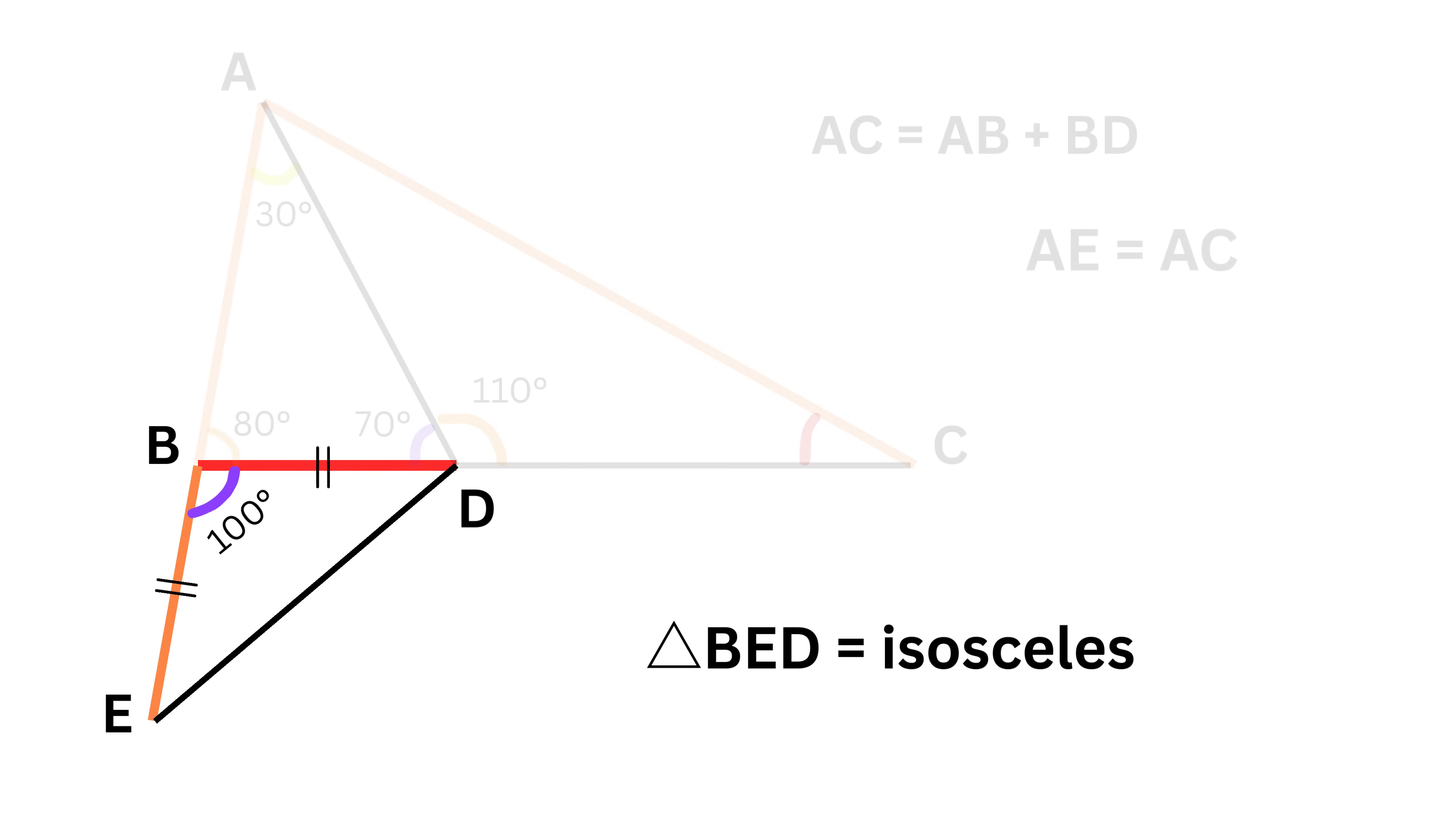Now focus on this isosceles triangle. By the property of an isosceles triangle, both these remaining angles are equal. Since this angle is 100 degrees and the sum of angles of the triangle is 180 degrees, the remaining 80 degrees are split equally between the two base angles. Thus each base angle will be equal to 40 degrees.